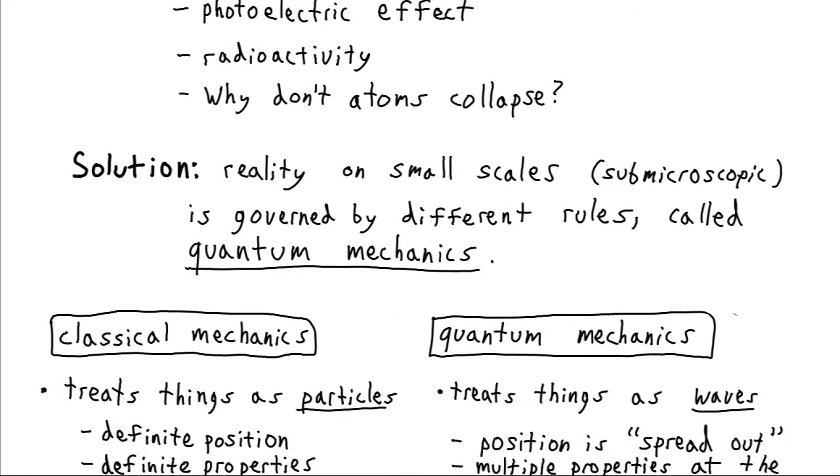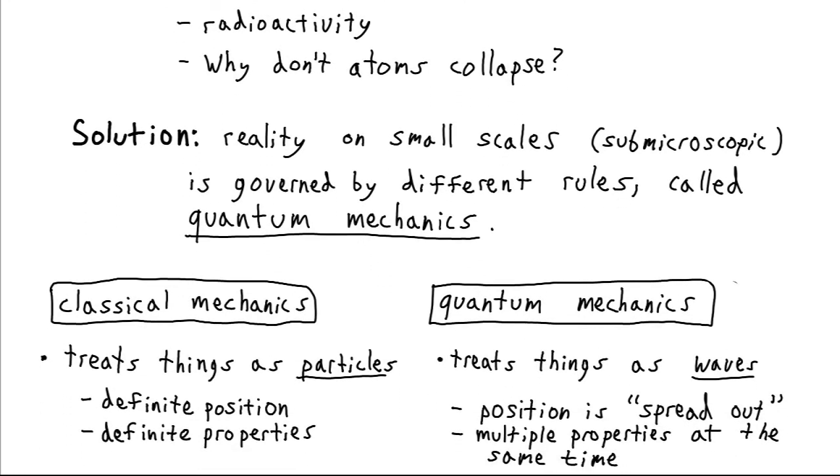So this is the difference between quantum mechanics and classical mechanics. Classical mechanics is the old Newtonian theory which has existed up to this point. According to classical mechanics, we can treat everything as a particle, so like a billiard ball, something that has a definite position and has definite properties you can measure.